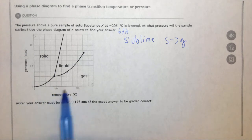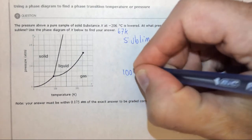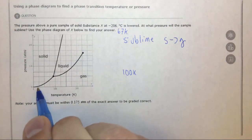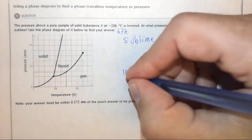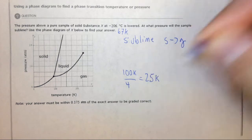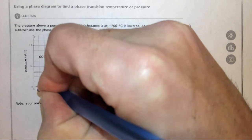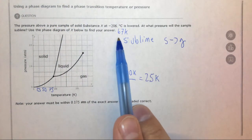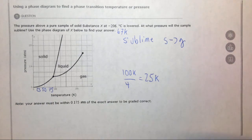Now we need to find 67 Kelvin here. To do that, we take the distance between 0 and 100 Kelvin, the two labeled points, and we have 1, 2, 3, 4 boxes. So each box is 25 Kelvin. This is 25, this is 50, this is 75, and that's 100. We want to go to 67 which is roughly halfway between 50 and 75.